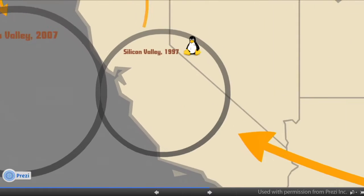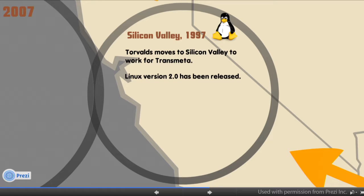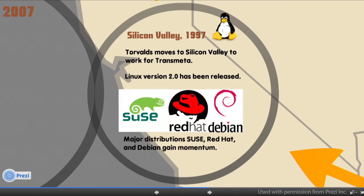Now we move to Silicon Valley in 1997. Linus Torvalds moved from Finland to Silicon Valley to work for Transmeta, which is a CPU manufacturer. By now, Linux version 2 is released, containing a number of advanced features needed by networks and used by businesses. In addition, many major distributions are starting to form and gain a larger user base. Popular distributions that people use today, such as SUSE, Red Hat, and Debian Linux, are gaining momentum.